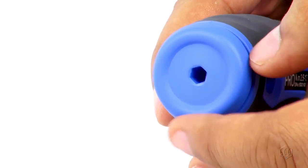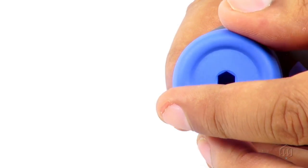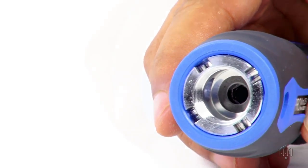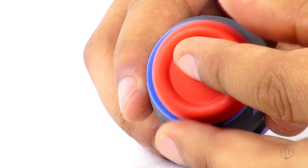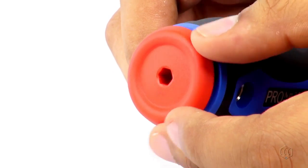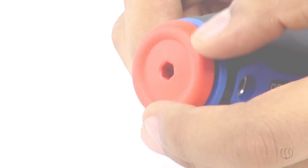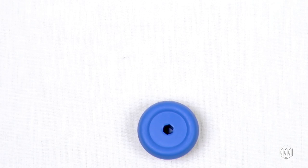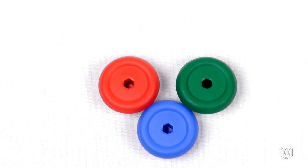If your production has different torque values, change the color cap to color code each tool's torque settings. Mountz sells the different color end caps as an accessory. Each pack of four includes blue, red, green and black.